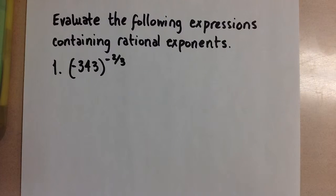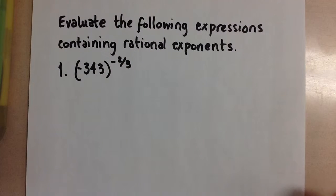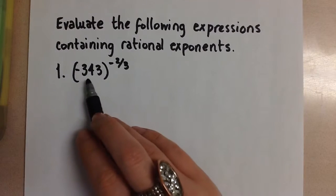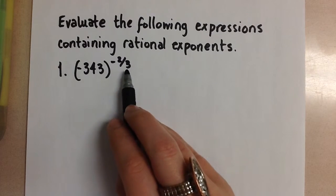We have two expressions here that contain rational exponents and we're going to evaluate these without using a calculator. For our first one, we have negative 343 to the power of negative 2 over 3.